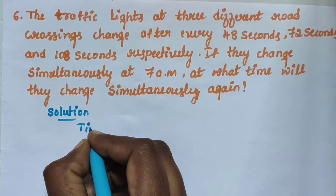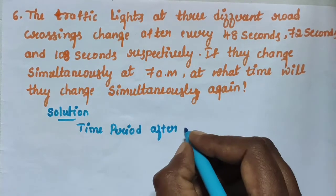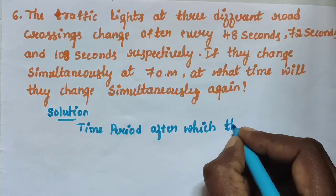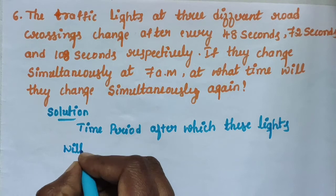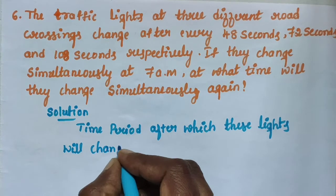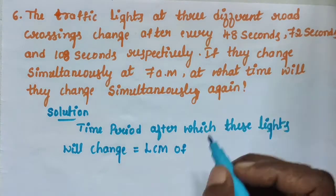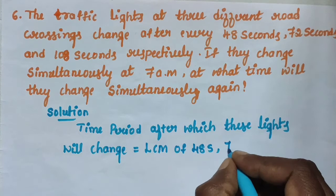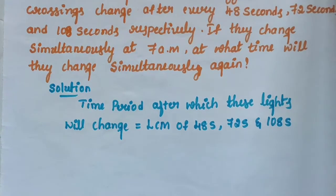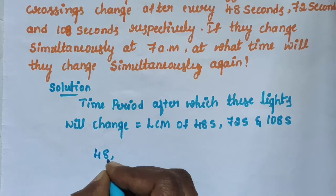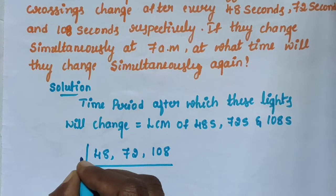Solution: The time period after which these lights will change together is equal to the LCM of 48 seconds, 72 seconds and 108 seconds. To find LCM, take 2: 2 × 24 = 48, 2 × 36 = 72, 2 × 54 = 108.